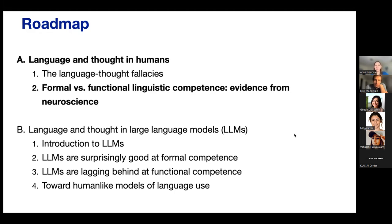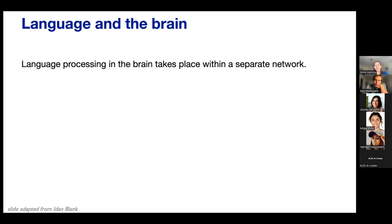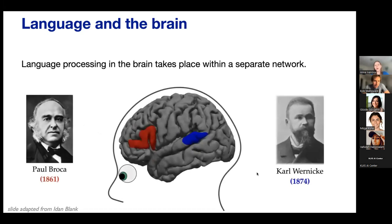So why is it really important to distinguish language proper from cognition more broadly? Because we know that this separation is really strong and prominent in the human mind and brain. In humans, language processing takes place within its own separate network. This observation goes all the way back to the 19th century, where two physicians, Paul Broca and Carl Wernicke, reported that patients who had damage to Broca's area or Wernicke's area had specific issues with language production and comprehension — but their thinking, logical reasoning, and executive functions remained intact. This was one of the earliest examples of the specialization of function within the brain, showing that the brain is at least in some ways modular.